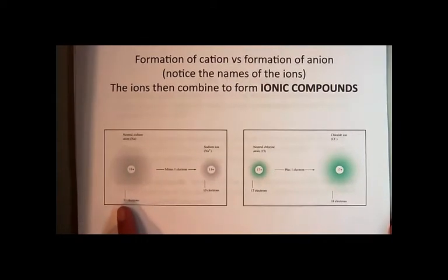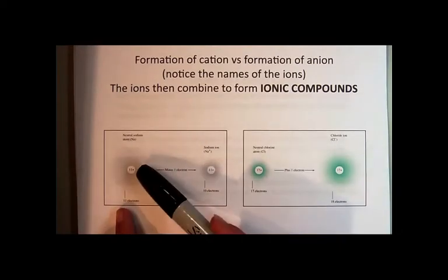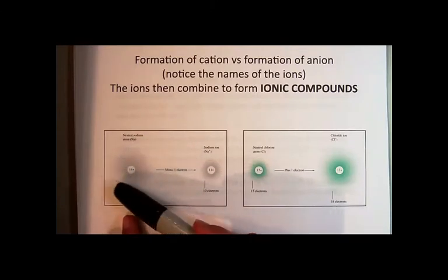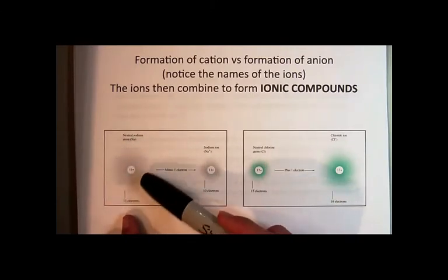For example, this is a model of a sodium atom. And the model is, in this case, showing us it has 11 protons in the nucleus, and then this is like the sea of electrons that are around the atom.